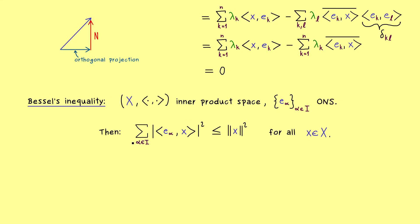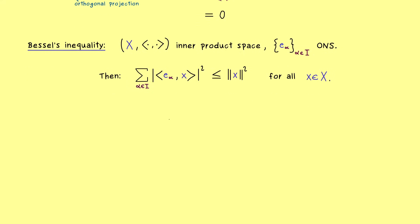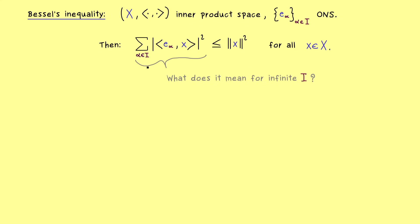If you have an orthogonal projection you can take the square root on both sides, which just says the length of the projection is smaller or equal than the original length. Note that orthogonal projections were only guaranteed in Hilbert spaces, so Bessel's inequality is more general for any inner product space. The only issue in this general context is the infinite sum on the left-hand side — I could be an uncountable index set. So let me define what such an uncountable sum means.